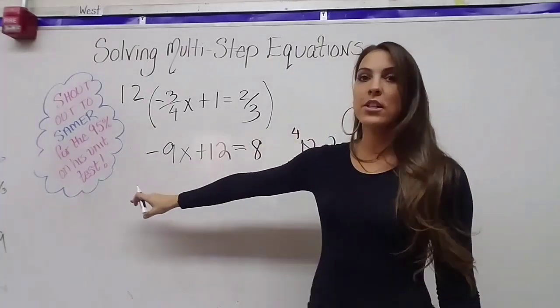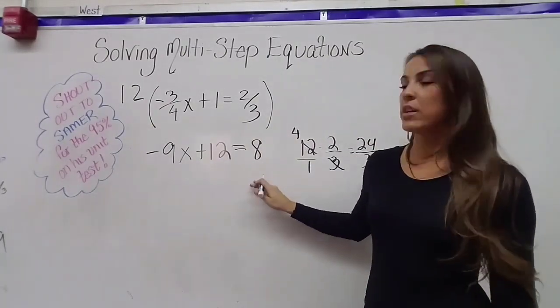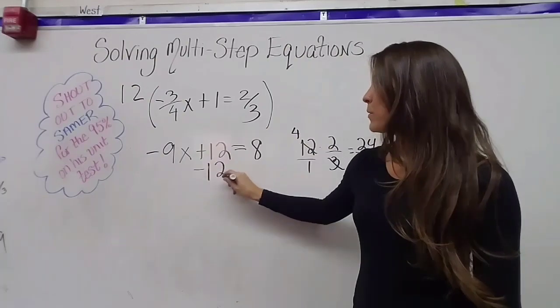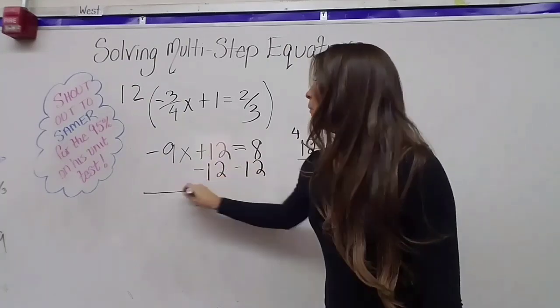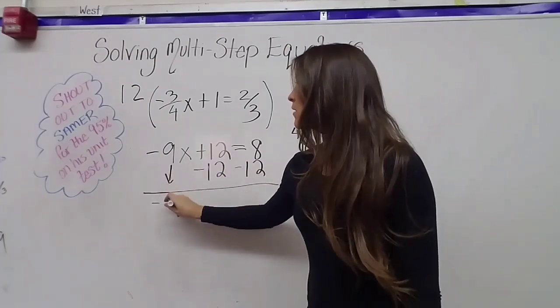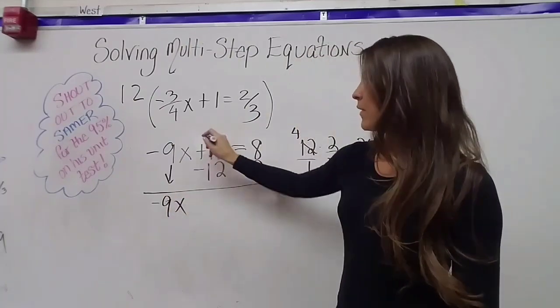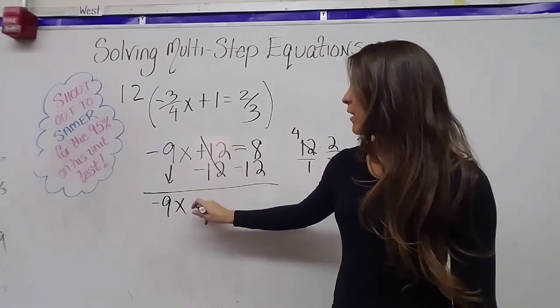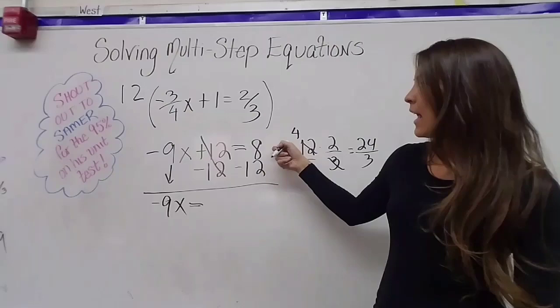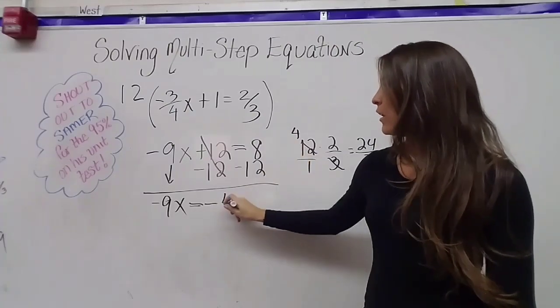Again, I've wiped out all my fractions. Now I have a nice two-step equation. I'm going to subtract 12 from both sides. Bring down my negative nine x. 12 plus negative 12 is zero. Zero plus negative nine x is just negative nine x. Eight minus 12 is negative four.